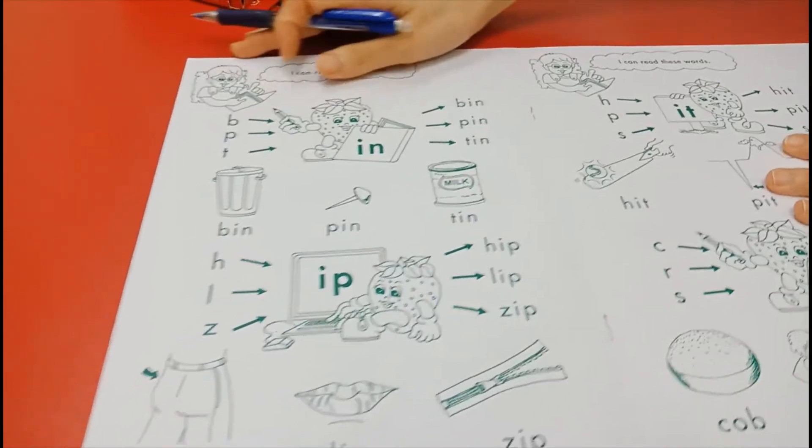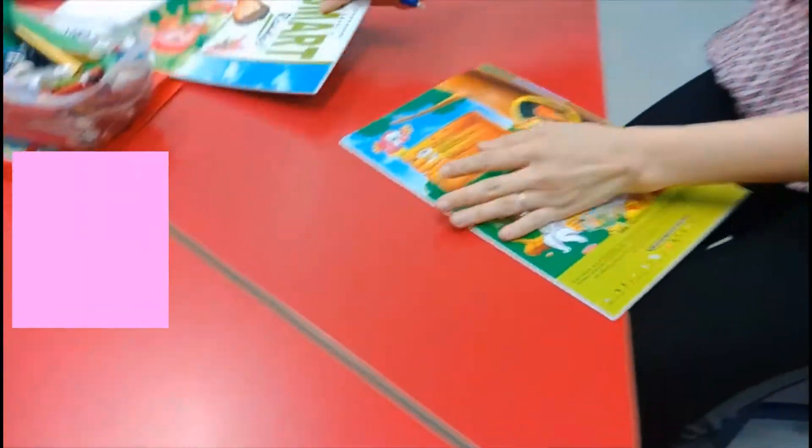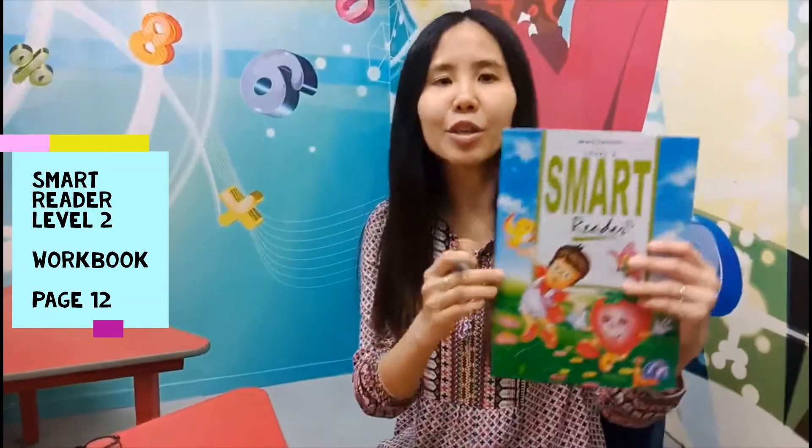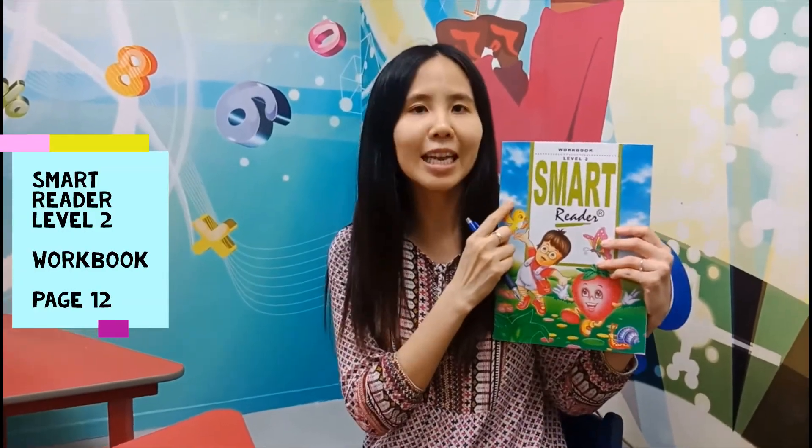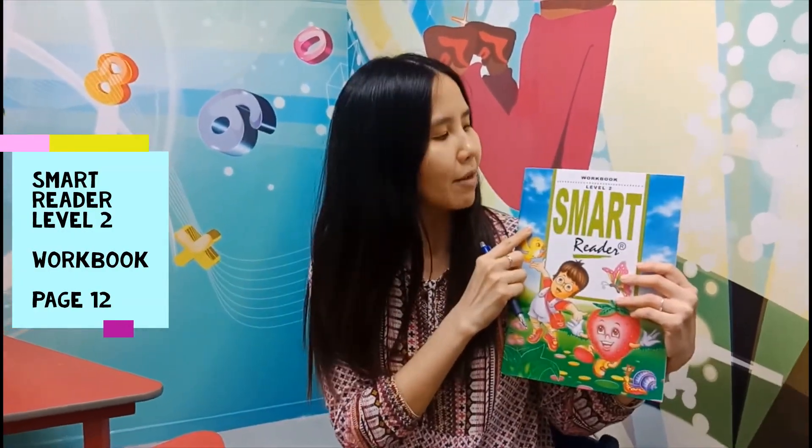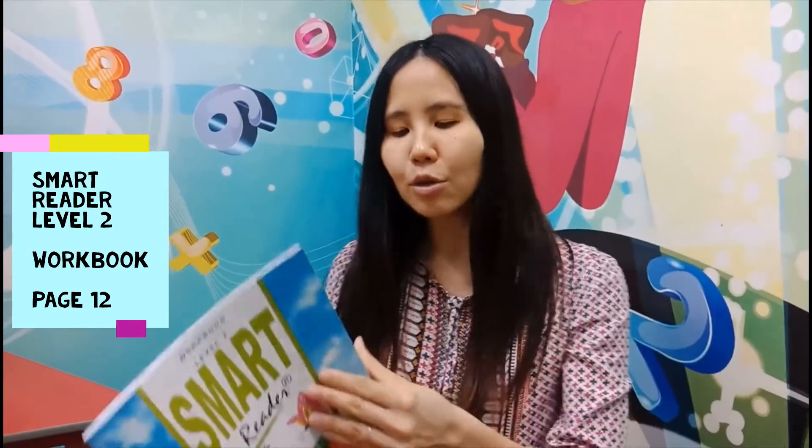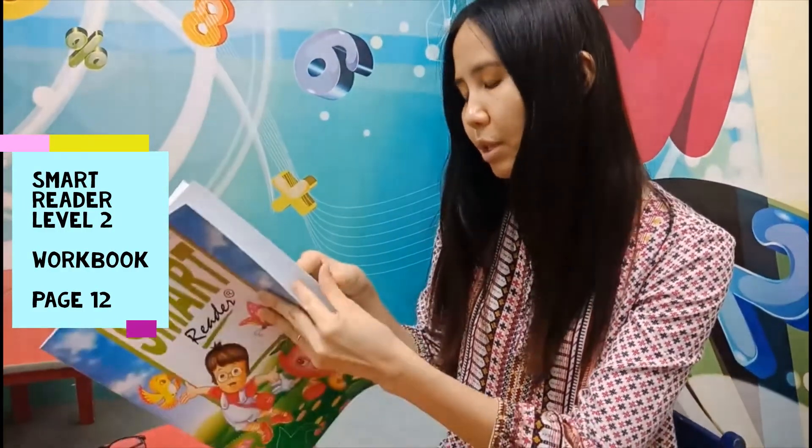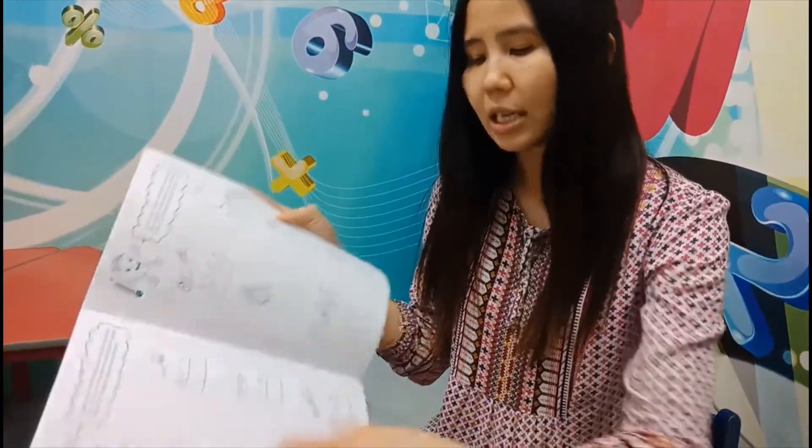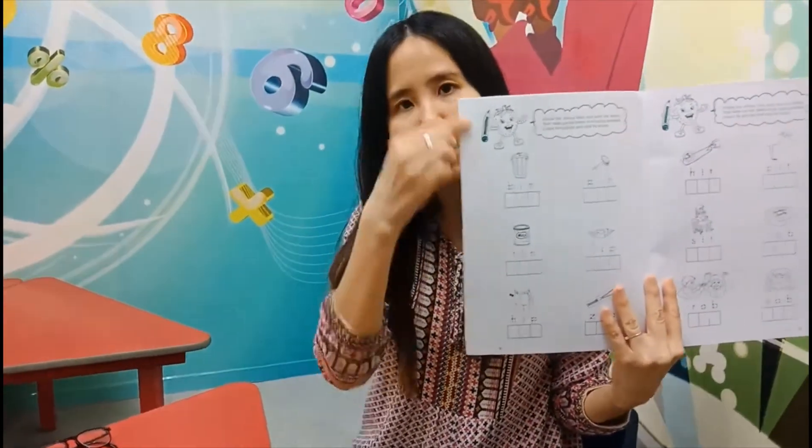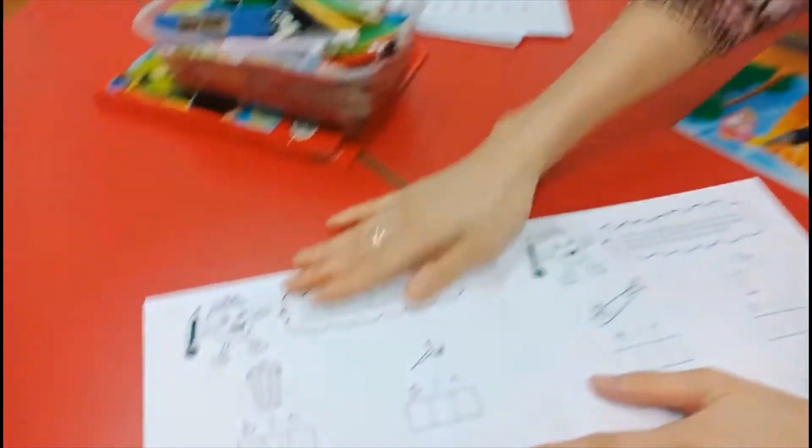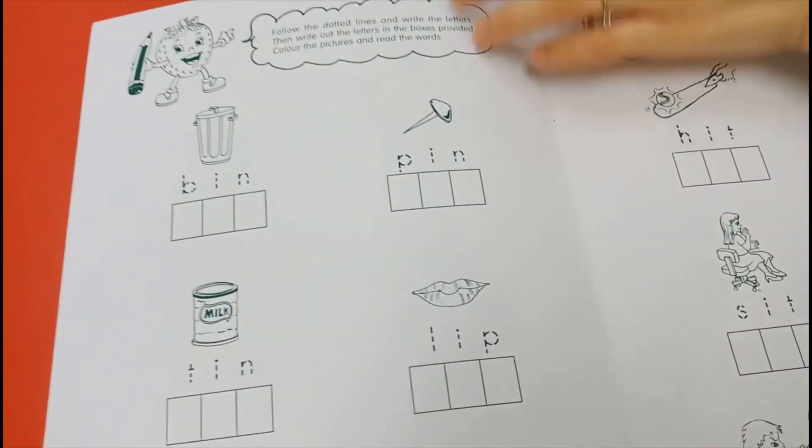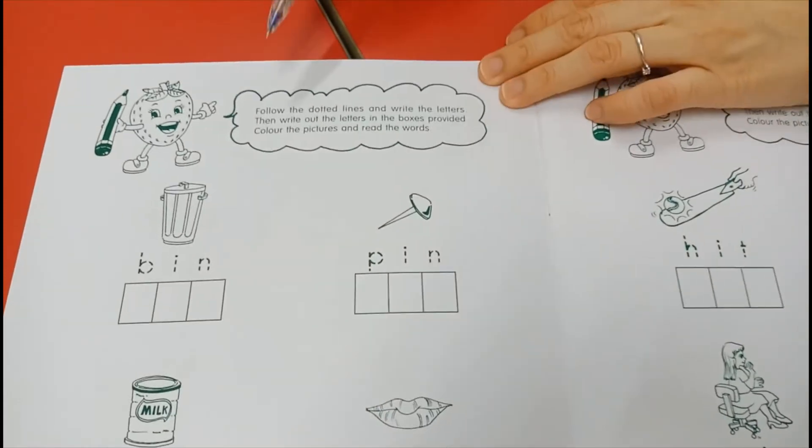So after we finish this one, we are going to take out the Smart Reading Level 2 Workbook. And then you turn to, let me see, what page you must turn to. Turn to page number 12. This page. Okay. Let's start. We read together.